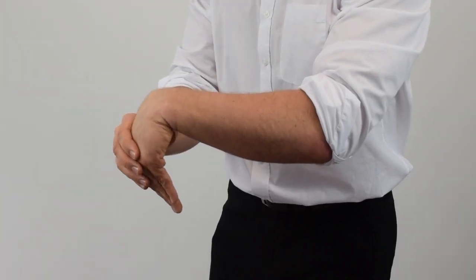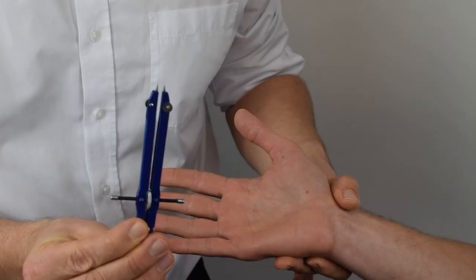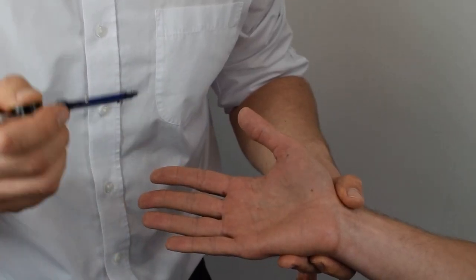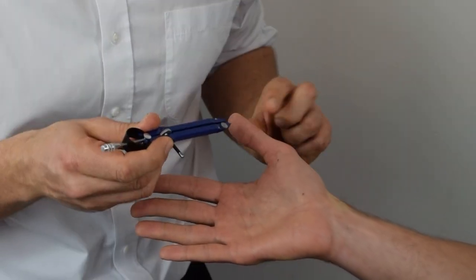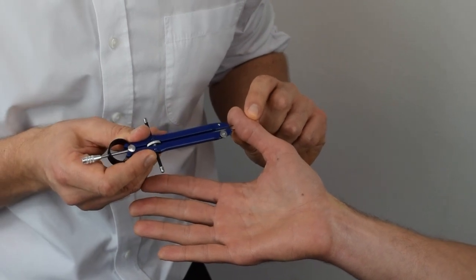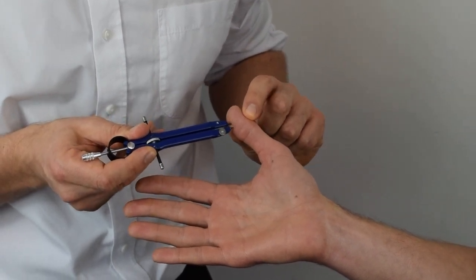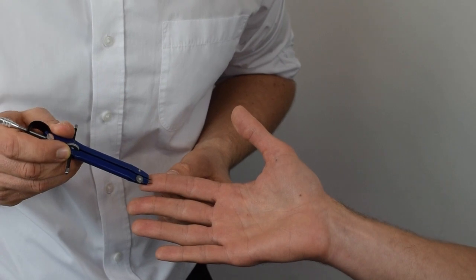Number four, a positive Phalen's test. And number five, a loss of two-point discrimination in the median nerve distribution. Specifically, the inability to differentiate between two points five millimeters apart or less. This simply indicates a loss of sensation and sensitivity.